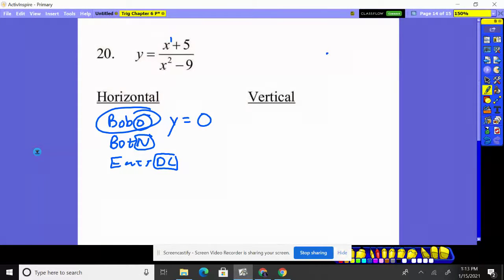Vertical. Vertical is always going to be x equals something. Well, in this case, we always look at the denominator.